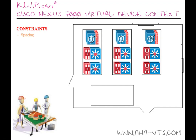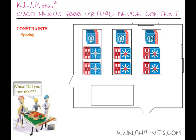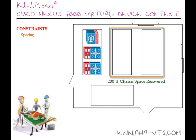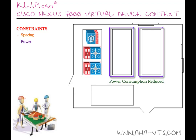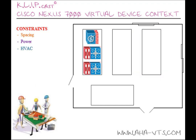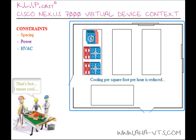Getting back to some of the constraints mentioned before — the first one is spacing. VDCs can be used to recoup square foot space. One Cisco Nexus 7000 chassis using three VDCs can recover 200% of chassis space, because it eliminates the need for other chassis since they can be virtualized within a single device. The next one is power, which is reduced drastically since you're operating fewer chassis in your data center environment. Next, HVAC — although HVAC is tied into power, this cost is also reduced since the number of devices to be cooled has been lowered.